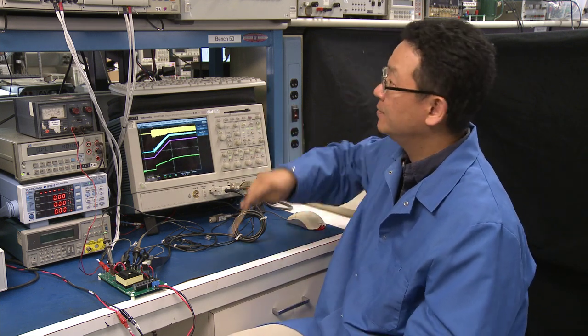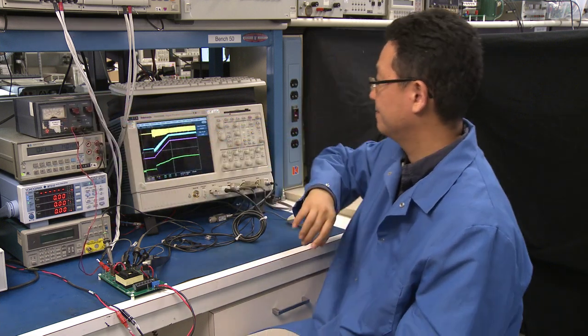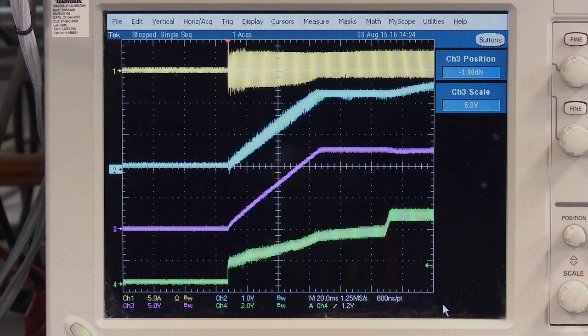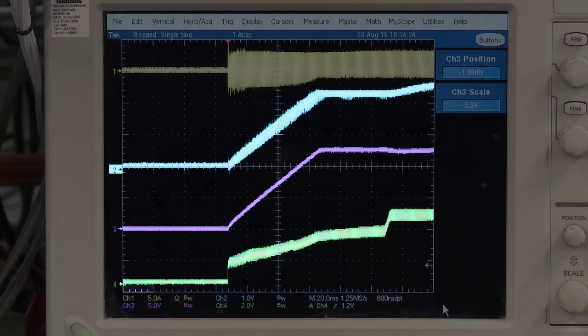Let's take a look at the startup waveforms. FAN7688 has advanced closed-loop soft start providing monotonic rising of the output voltage without any overshoot even at no load condition. Now I power up the power supply at full load condition. And you can see that there is no overshoot in the output voltage and monotonically rising. It just follows the soft start voltage and the feedback loop is regulating the output voltage without saturation.